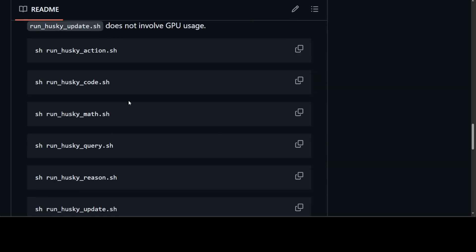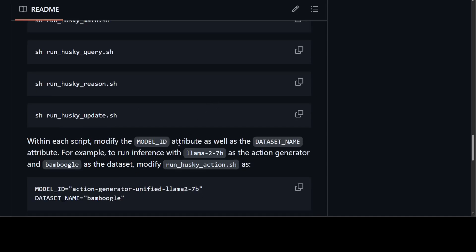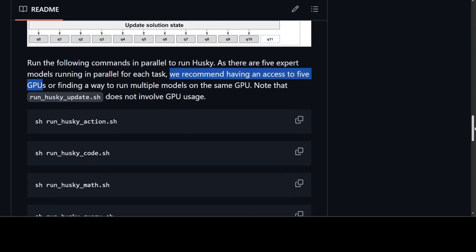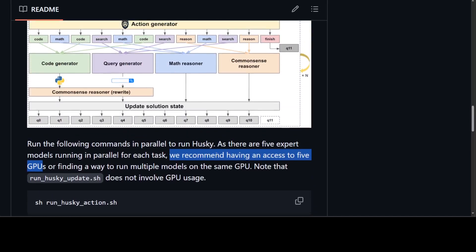And then you can use these shell commands in order to trigger all of these, and you would need to make some changes around model ID, but more or less I think the real blocker here is these five GPUs.